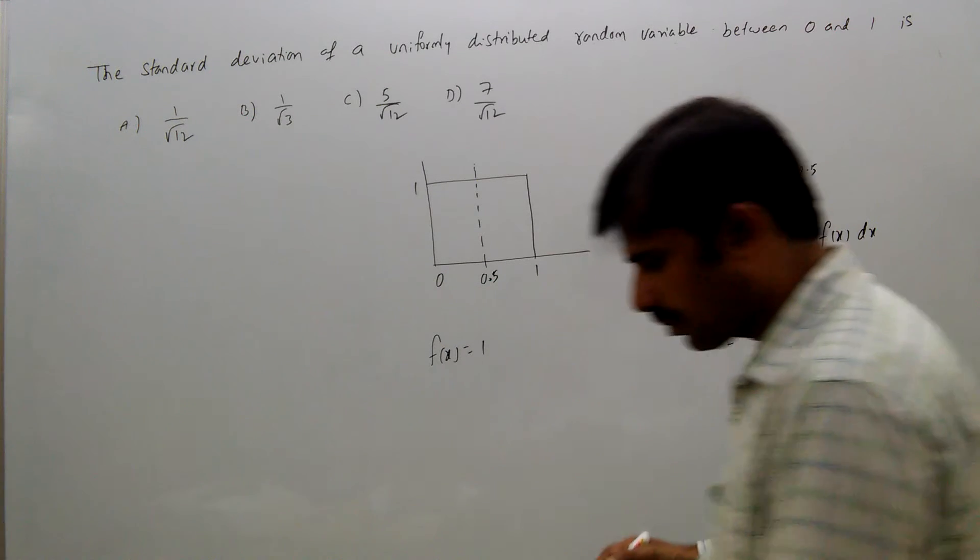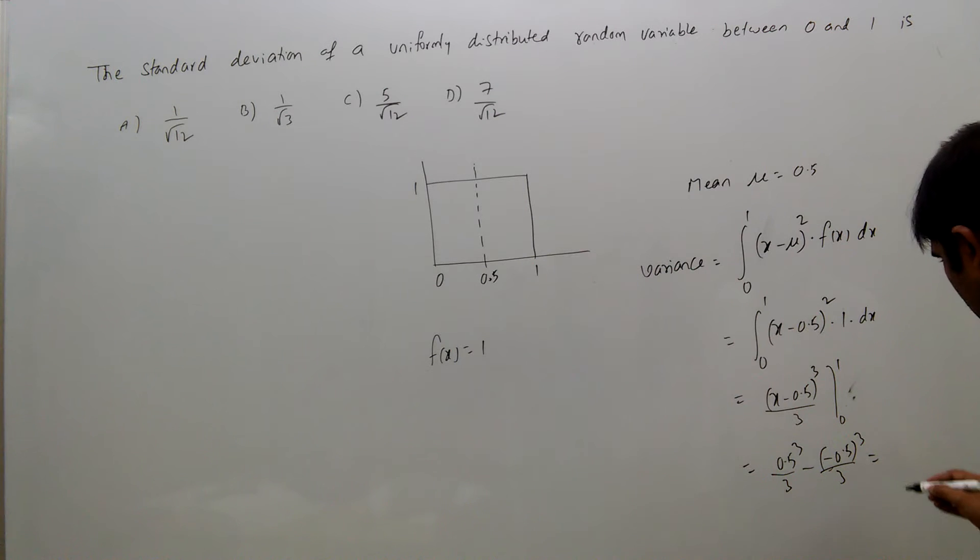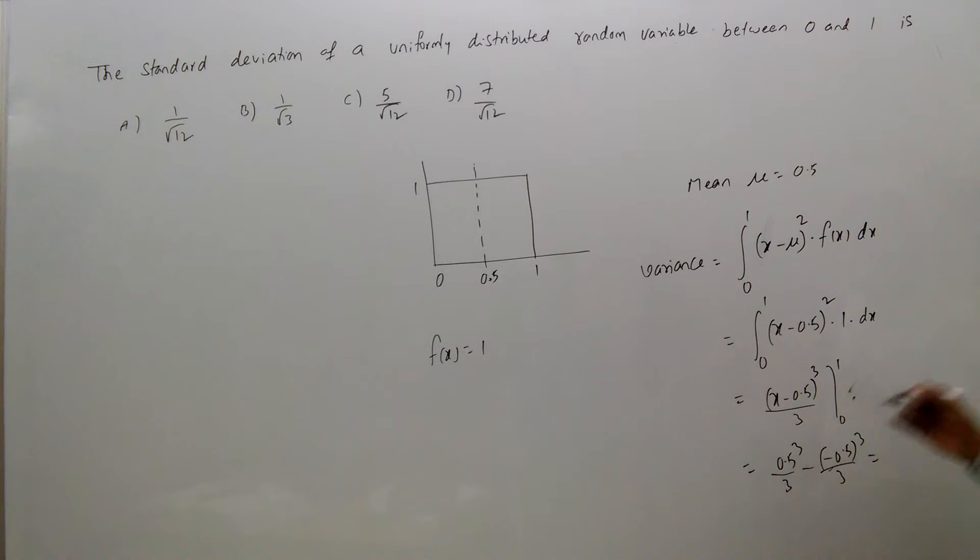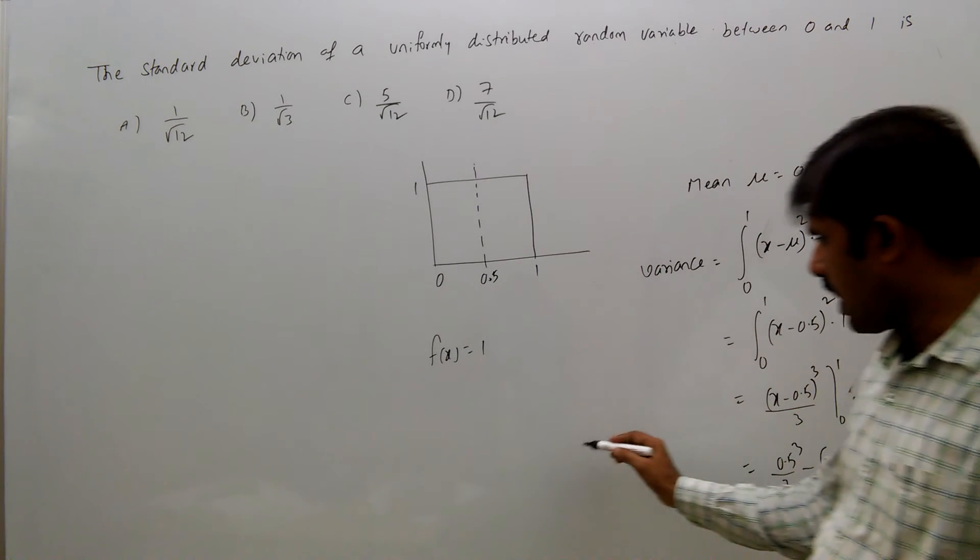That equals 1/2 cubed, which is 1/8, which means 1/24 plus 1/24, which equals 1/12. So 1/12 is the variance.